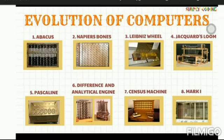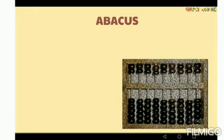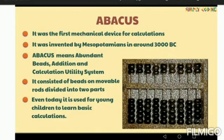The first device is the abacus. As you can see in the image, it was the first mechanical device for calculations. It was invented in Mesopotamia around 3000 BC, but in many books you will also see that the abacus was developed in China as well — both are different theories.